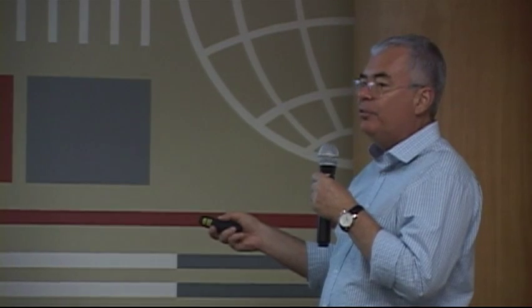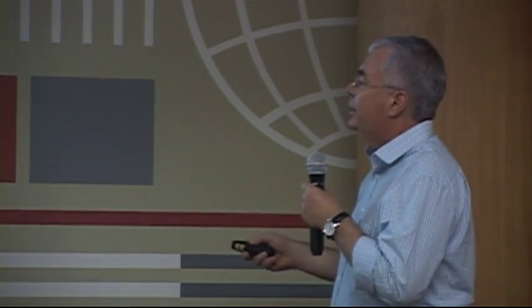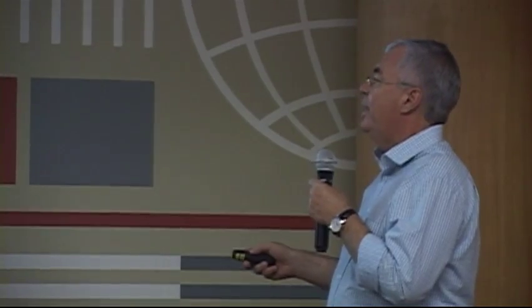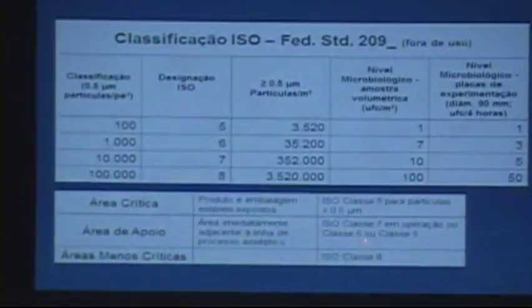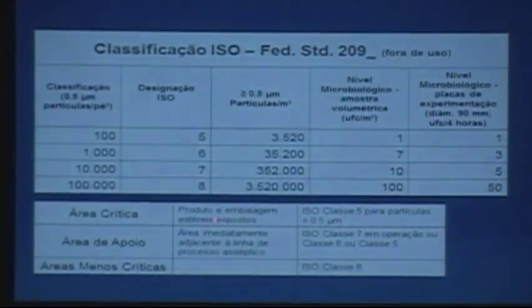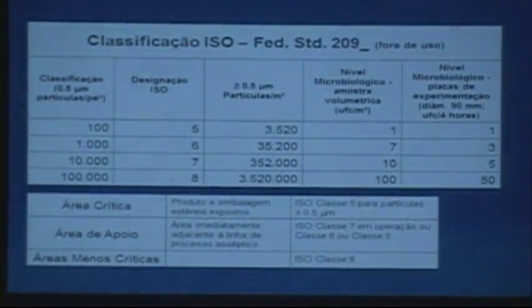You can achieve class 7 with 20 air movements, but only under certain conditions — guarantee is another matter. Here we have a table that shows critical areas, support areas, and less critical areas, and gives the usual classification for each of them.